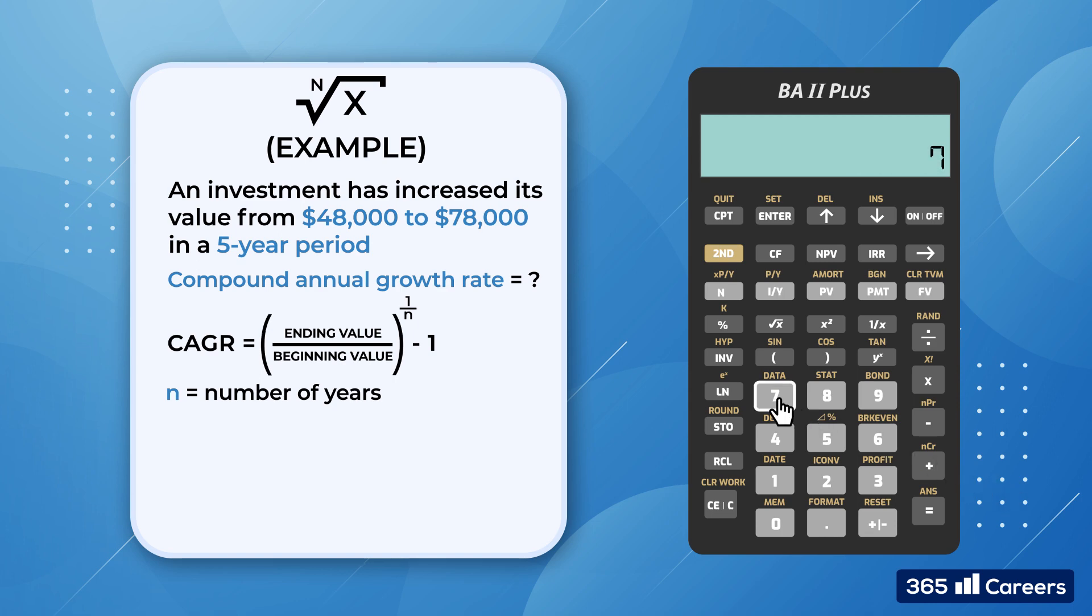Okay, so we divide $78,000 by $48,000. Then we need to take the fifth root of the result, since the number of years is equal to 5. Unfortunately, the Texas Instruments BA2 Plus does not have a built-in function that allows us to take the nth root of a number.